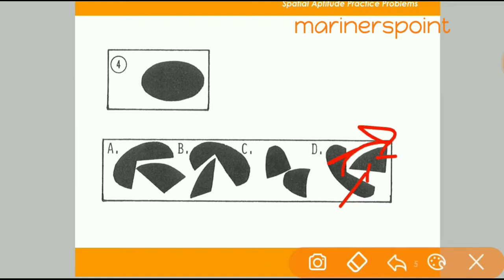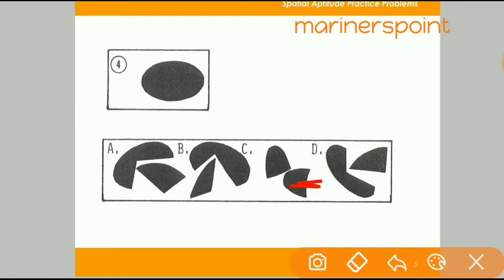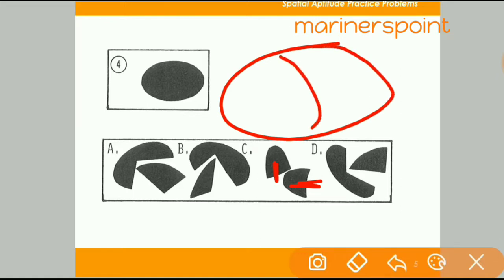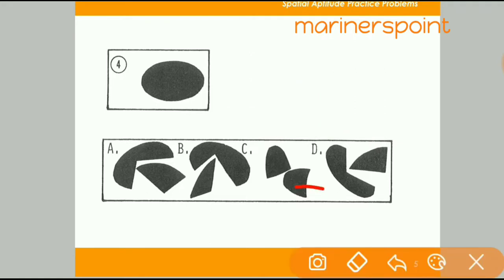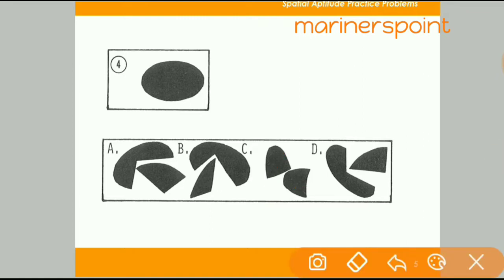If we rotate anti-clockwise and try option C, the gap goes inside but the piece is not fully outside as required. Looking at the figures, in one it should be up and in the other it should be down — but it is not fitting properly enough. For option B, when we rotate, this part fits here and this goes here, but note the angle — it is fully 90 degrees in one place but this is not 90 degrees, so B is also not the right answer.